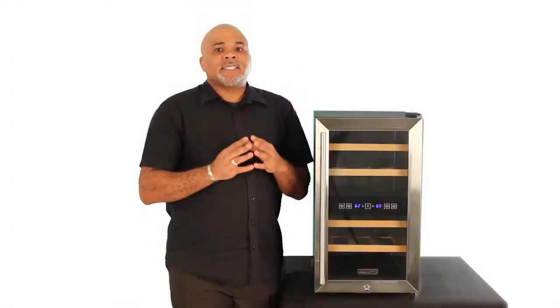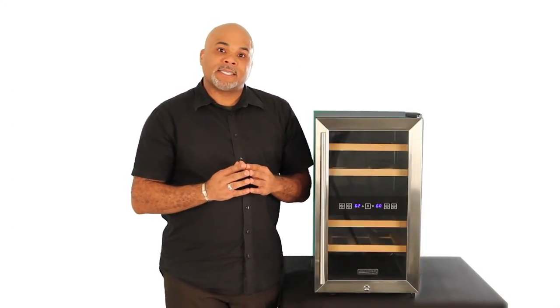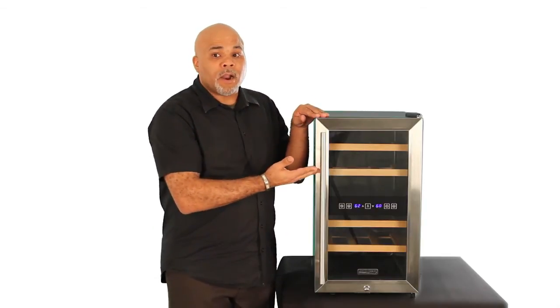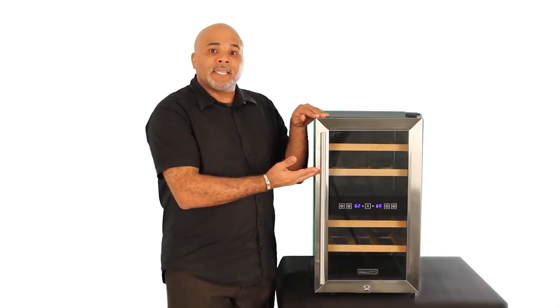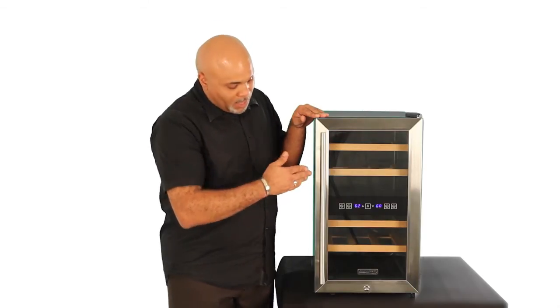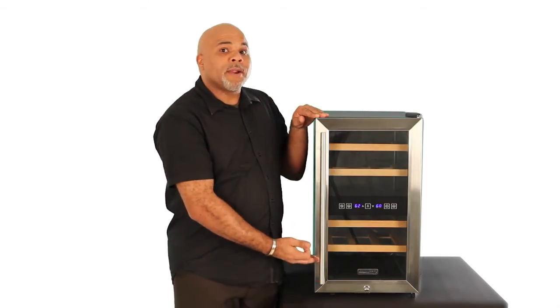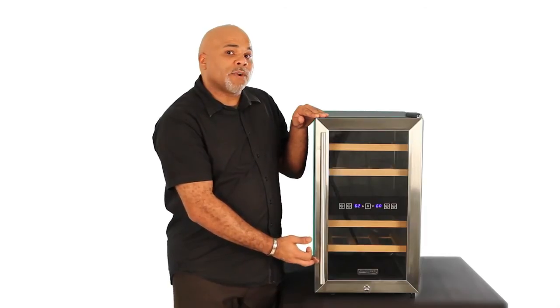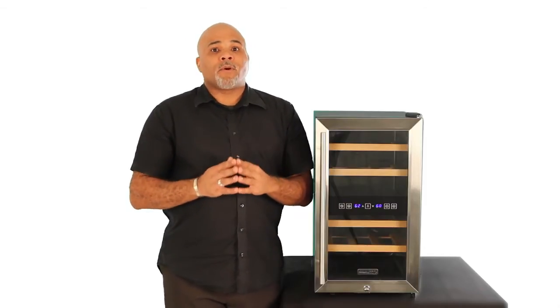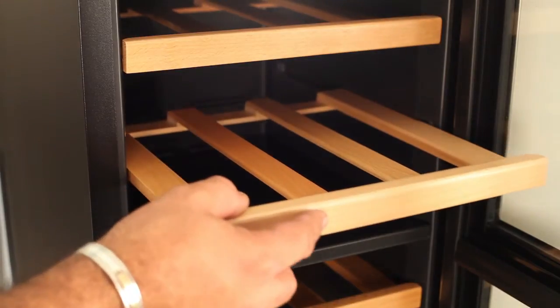Each zone in the TWR 187ESS holds 9 bottles. The upper zone is used primarily for reds and has a temperature range of 54 to 66 degrees Fahrenheit. The bottom zone would be used primarily for whites and has a temperature range of 46 to 66 degrees Fahrenheit. The TWR 187ESS has easy slide-out wood shelves.